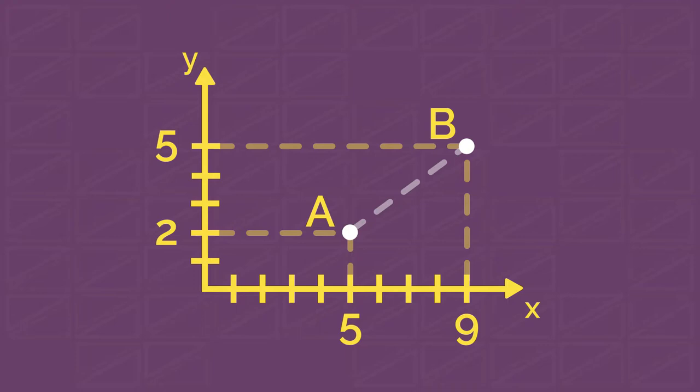But Pythagoras theorem can fix that. First, let's find horizontal and vertical distances between the two points. We need two additional lines for that. Let's name the intersection point C.